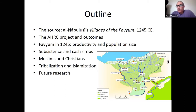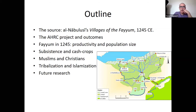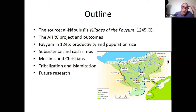What I'll try to do today is explain the dataset I've been using, which is based on a literary work composed in the middle of the 13th century for a specific province in Egypt — the project and its outcomes, the main results concerning economic profile, population size, subsistence versus cash crops, Muslims and Christians, my thoughts on the process we see at that point in time, and what could be done more with this data.